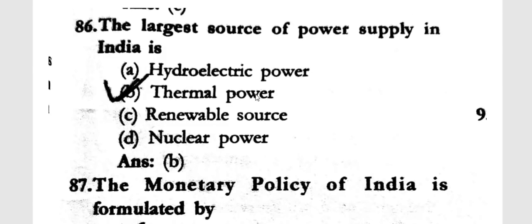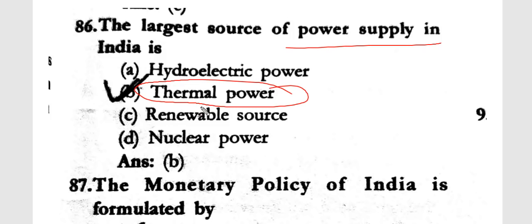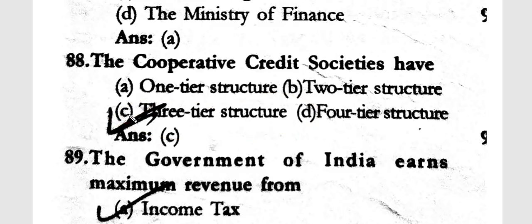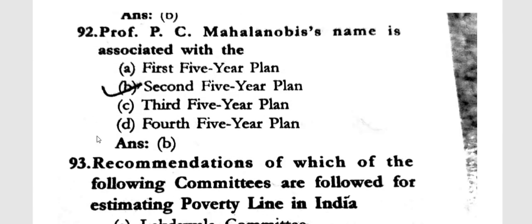The largest source of power supply in India is thermal power. The monetary policy of India is formulated by the Reserve Bank of India. Cooperative credit societies have a three-tier structure. The Government of India earns maximum revenue from income tax / corporate tax.